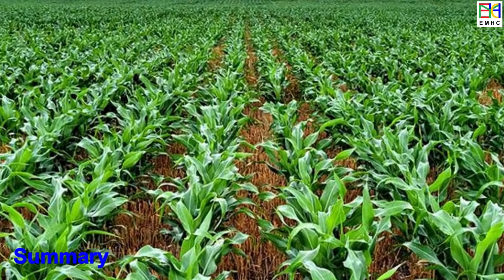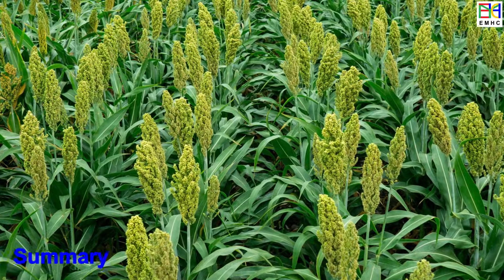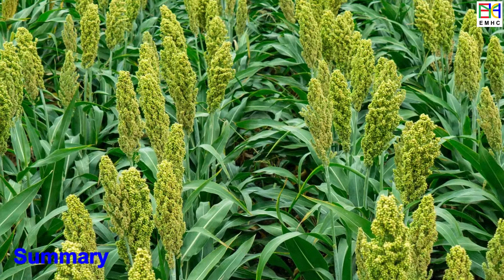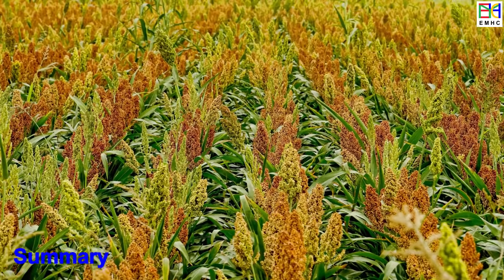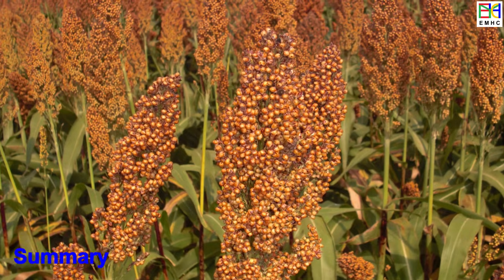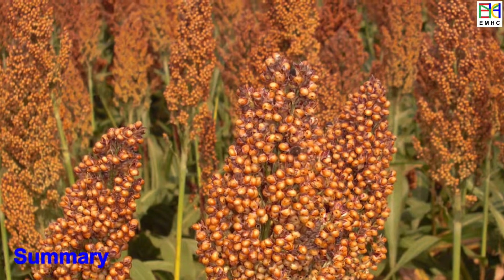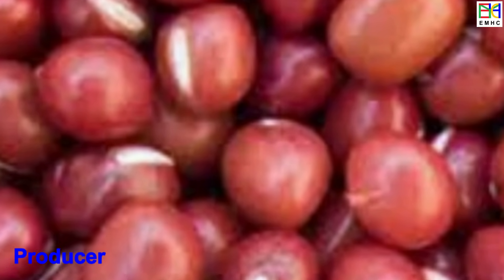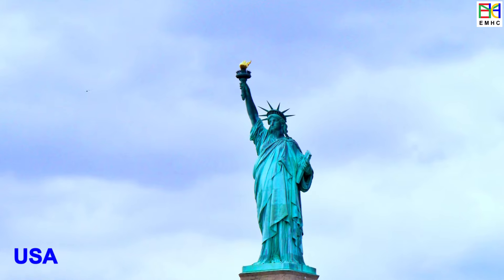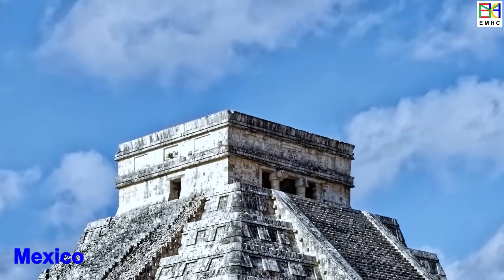In summary, sorghum goes through several distinct growth stages during its life cycle. The duration of each stage can vary depending on the variety of sorghum, environmental conditions, growing conditions, and region. In general, the life of a sorghum plant lasts between 90 to 120 days from planting to harvesting. Understanding the life cycle of sorghum is essential for achieving optimal yield and quality, as well as for proper crop management. More than 60 million tons of sorghum are produced worldwide each year. The United States is the largest sorghum producer in the world, Nigeria is the second largest, and other major producing countries include Mexico, India, and Sudan.